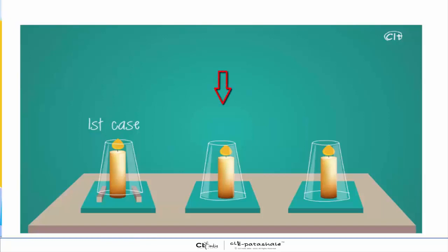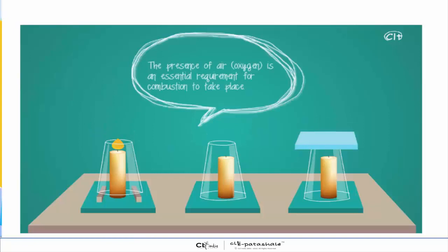In the second case, which is the tumbler in the middle, there is no more oxygen left in the tumbler and it extinguishes. In the third case, we cover the base deliberately with a lid on top and the candle extinguishes again. This shows that the presence of air and the component oxygen in that is an essential requirement for combustion to take place.